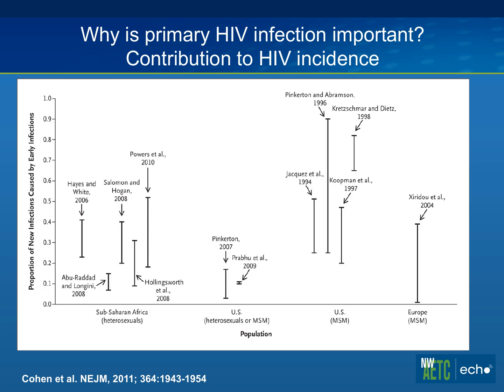This figure is from a nice review on acute HIV infection by Mike Cohen at UNC, published last year in the New England Journal, looking at all studies that tried to answer what proportion of all new infections come from people who have also been recently infected. There's a relatively wide range of estimates, but overall a sizable minority of all new infections will come from someone else who has also been recently infected, meaning primary infection contributes disproportionately.